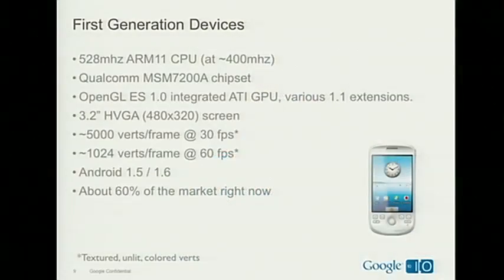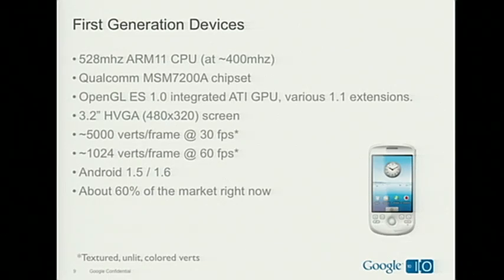First generation devices, typified here by the HTC Magic — also called the My Touch in the US — have basically the same hardware as the G1: typically a 500 MHz ARM processor. These devices support OpenGL ES 1.0 and 1.1, almost all with a hardware backend. They almost all have HVGA screens. I can get about 5,000 textured, unlit, colored verts per frame at 30 frames per second, and about 1,024 verts per frame at 60 fps. These devices are generally Android 1.5 or 1.6, and they represent about 60% of the market.